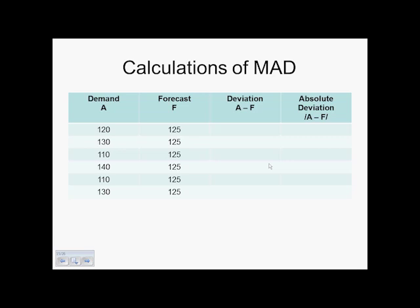So 120 minus 125 is negative 5. 130 minus 125 is positive 5. 110 minus 125 is negative 15. 140 minus 125 is positive 15. 110 minus 125 is negative 15, and 130 minus 125 is positive 5.